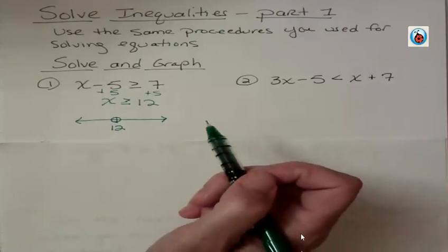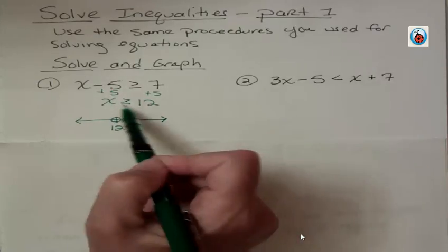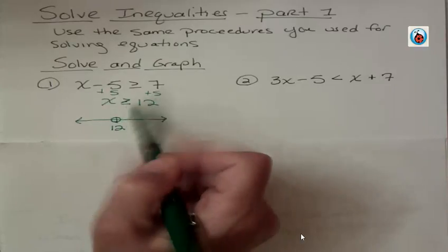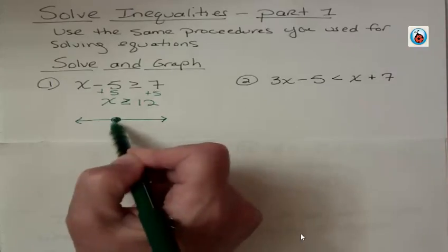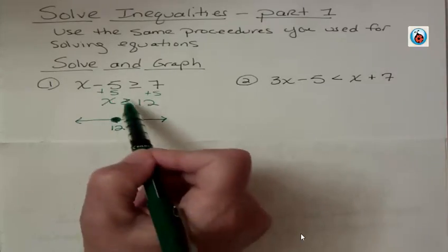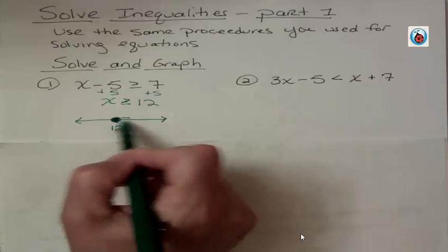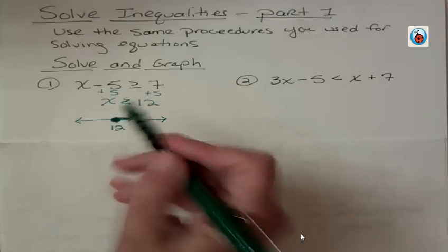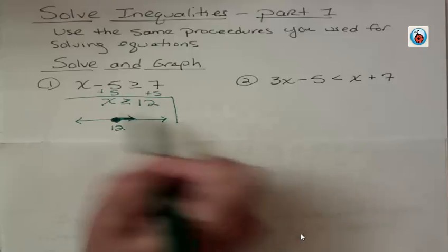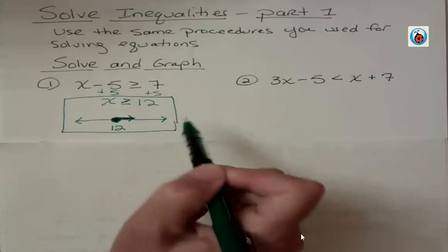Should we shade the circle? Yes, because we have an equal to part. That means an additional thing we have to do is to shade the circle. x is greater than, so greater than goes to the right. So we solved it and we graphed it. So there's the solution and the graph.